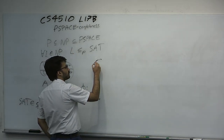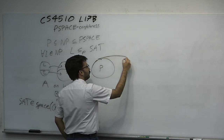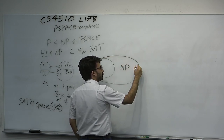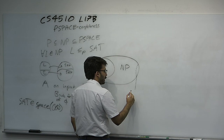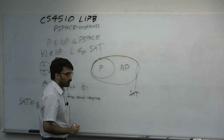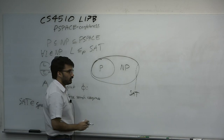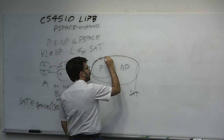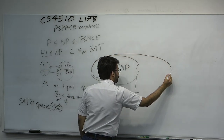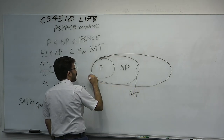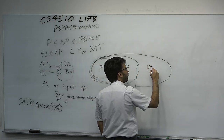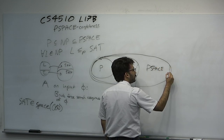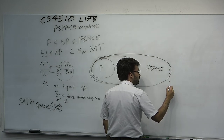Our picture looks like this: we have P, we have NP, and SAT along with thousands of other NP-complete problems are the hardest problems in NP with respect to polynomial time reduction. We've just proved that NP is a subset of PSPACE. So PSPACE is out here, and it turns out there are things called PSPACE-complete problems, which is the point of today.